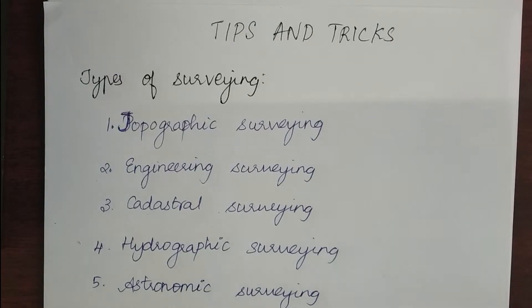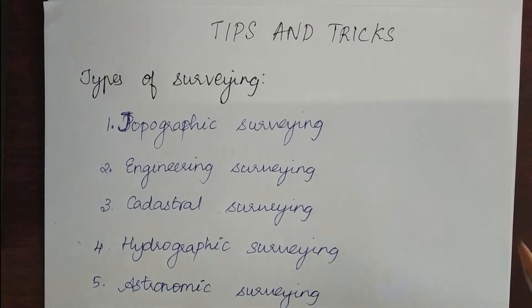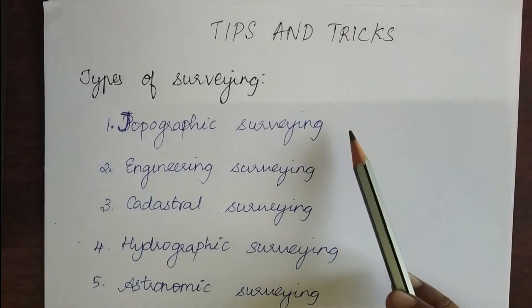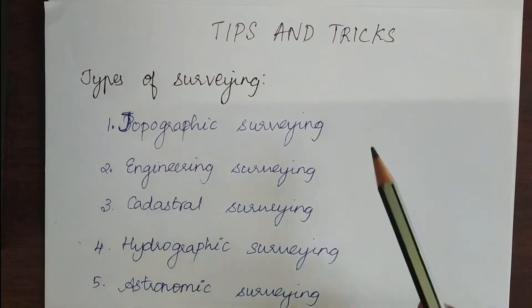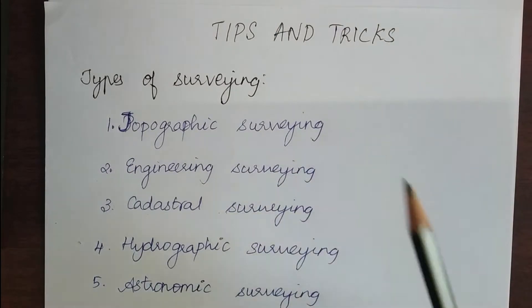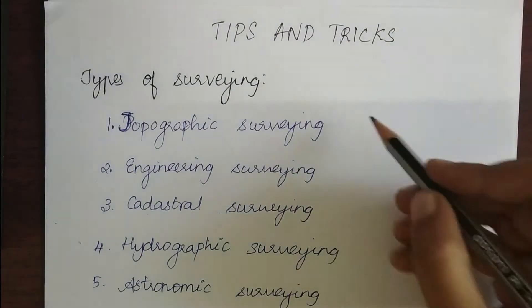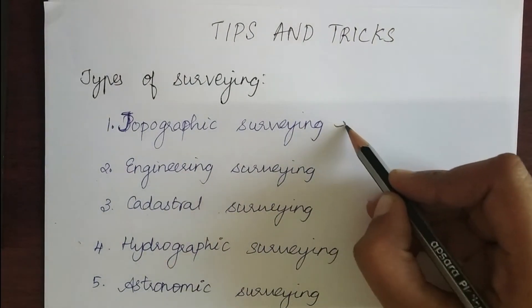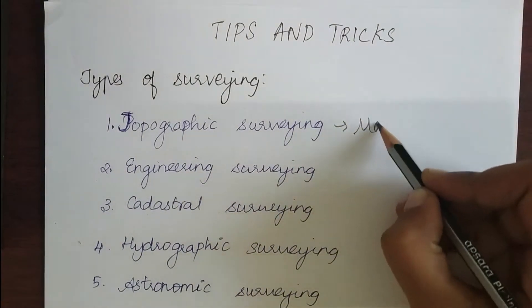Hello everyone, welcome to Tips and Tricks. Today we are going to see the types of surveying. The first type of surveying is topographic survey. Topographic survey is used to create maps and contour maps.